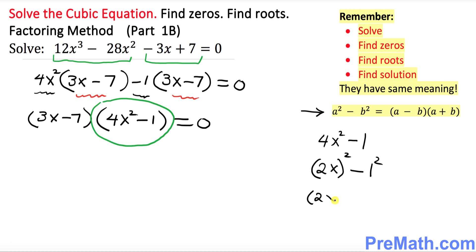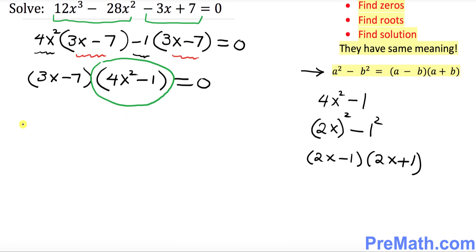I want you to use this formula right up here. So this could be written as 2x minus 1 times 2x plus 1. So let's go ahead and put down right up here everything now. So 3x minus 7 times 2x minus 1 times 2x plus 1 and equals to 0.